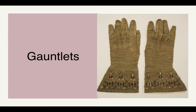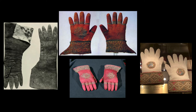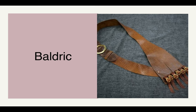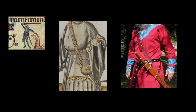Gauntlets are gloves typically worn by nobility, made of soft leather with a wide flaring wrist. The baldric is a band of leather or fabric draped over one shoulder and falling diagonally across the body. You could have your sheath mounted on it, a purse, etc.